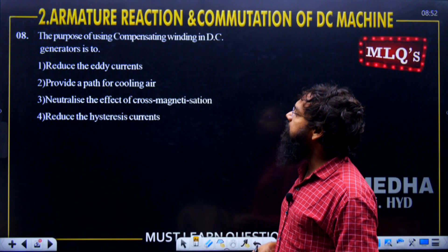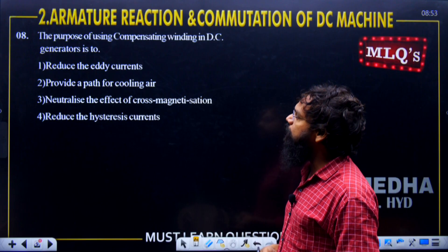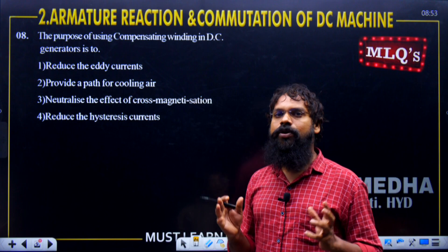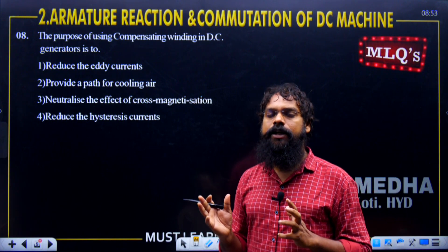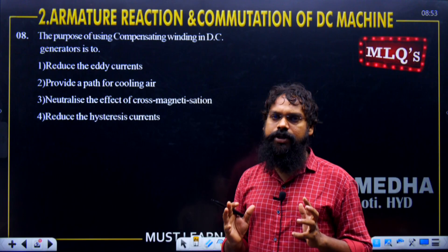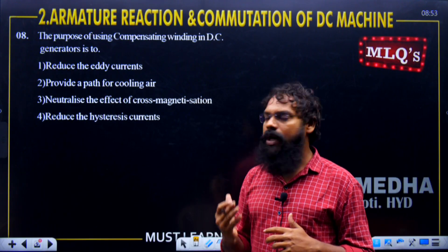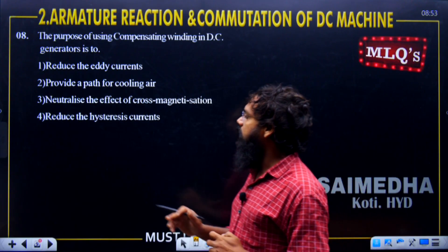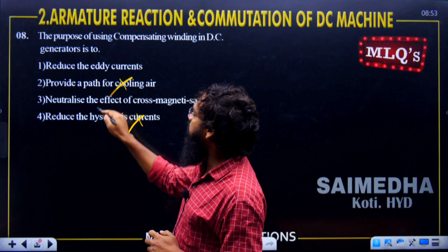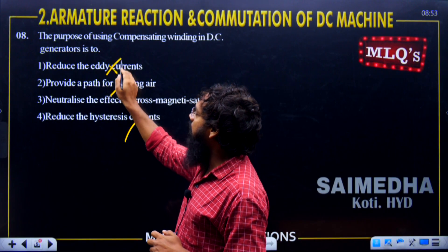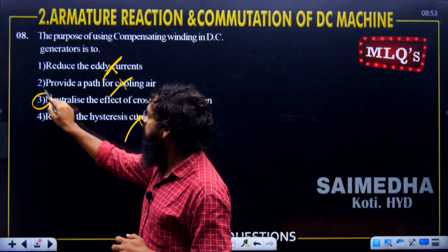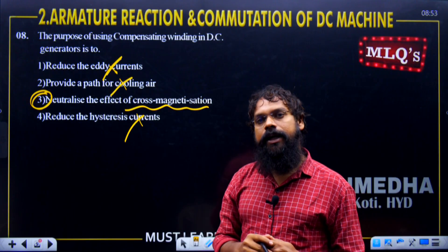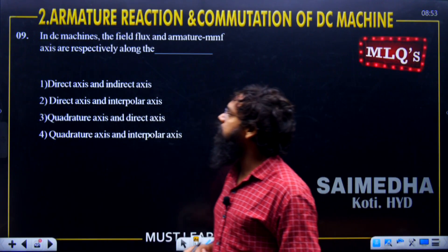Next, the purpose of using compensating winding in a DC generator: the major two types — interpole winding and compensating winding — both function to neutralize the armature reaction effect. This is the effect of cross-magnetization.